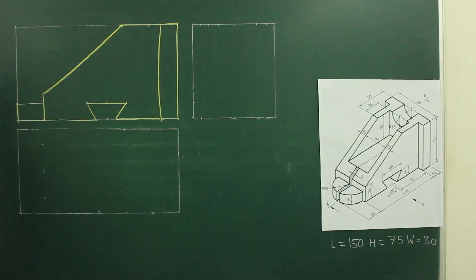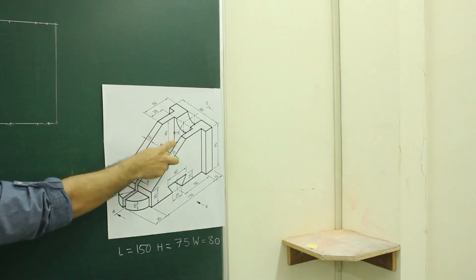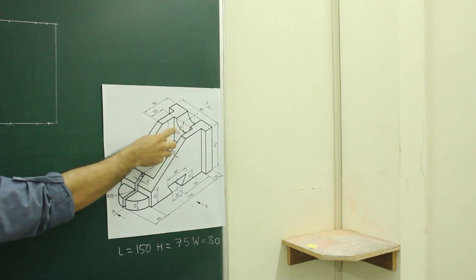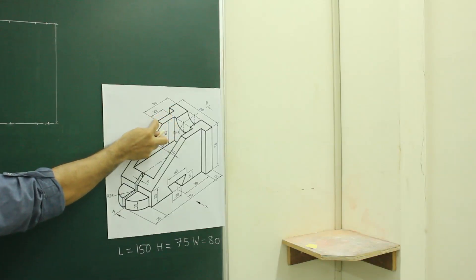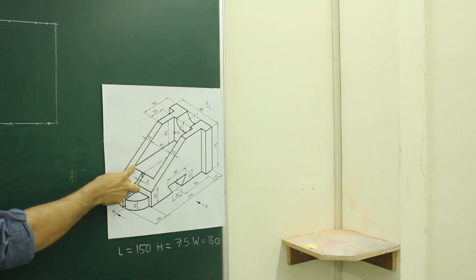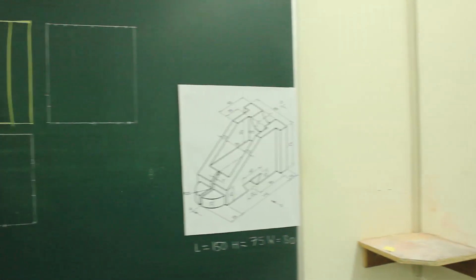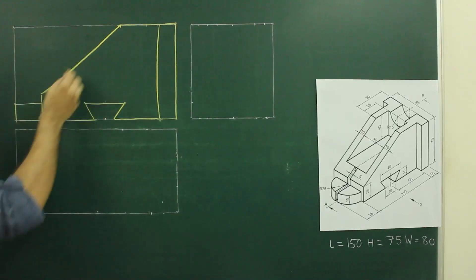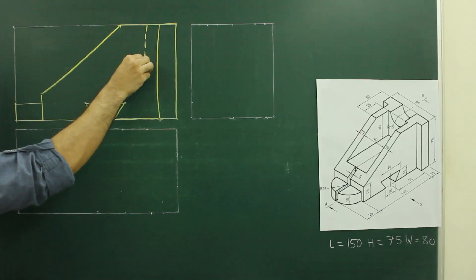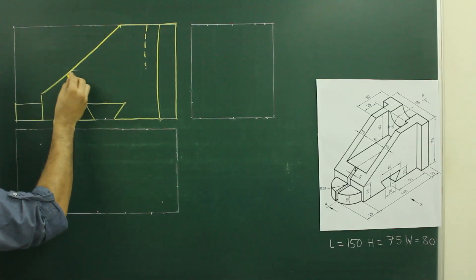Now after this, in the front view, if you see the main diagram, from the front you won't be able to see this edge as well as this circular edge. So what we will do — you have to go inside by 25, go down by 40, and draw a horizontal line. For this circle we need to draw a dotted line, so we'll go inside by 25, go down by 40, and draw a horizontal line.